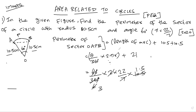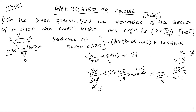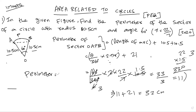22 into 1.5 gives 33, divided by 3 equals 11. So the arc length is 11. Then 11 plus 21 (that is 10.5 plus 10.5) equals 32 centimeters. So the total perimeter equals 32 centimeters.